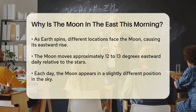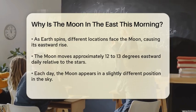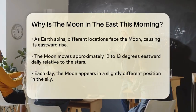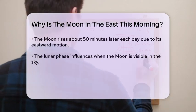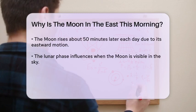Here's how it affects the timing. Because the moon moves eastward, it rises about 50 minutes later each day. So, if you saw the moon in the east yesterday morning, today it will rise a bit later, and tomorrow even later still.